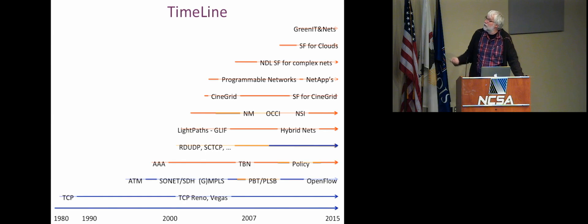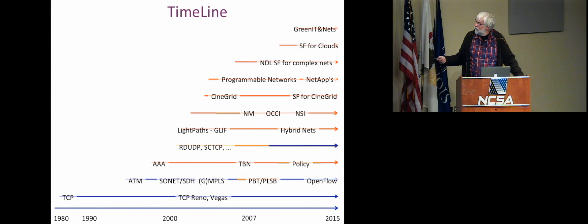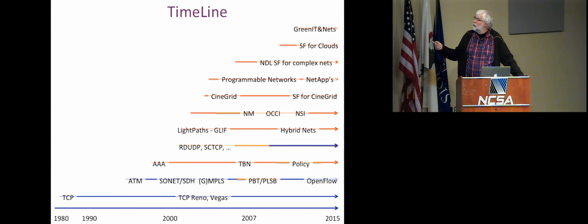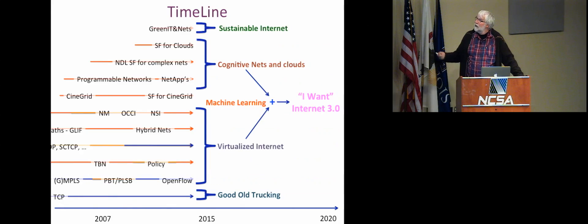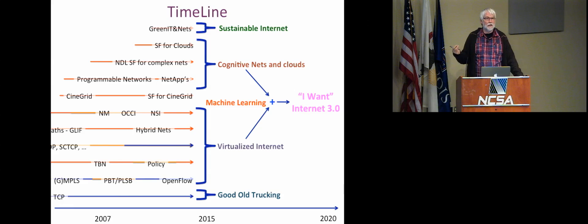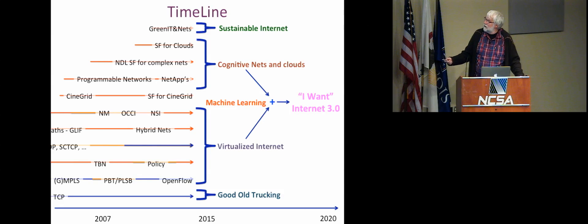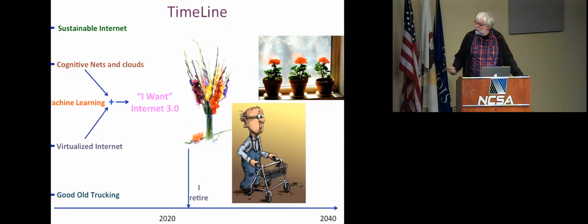Here is a timeline of where we worked on green semantic frameworks — starting with ATM, SONET, AAA, multi-domain authorization, light paths, network management, then CineGrid, programmable networks, sustainable internet, cognitive networks and clouds, virtualized internet networks. We want machine learning to build Internet 3.0. In our field, the only constant factor is change. In the 50 years it took physicists to find the Higgs boson, we went from assembler, Fortran, COBOL, Unix, TCP/IP, WWW, to Facebook, Twitter, SDN, and big data. So there's never a dull day. We are now living in a world where DDoS attacks destroy banks and Bitcoin — we are really in need of safe, smart, resilient, sustainable infrastructure.